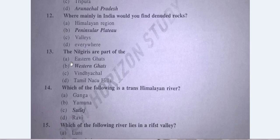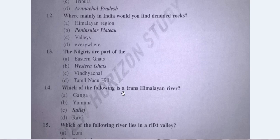Next question: The Nilgiris are part of — A. Eastern Ghats, B. Western Ghats, C. Vindhyachal, D. Tamil Nadu Hills. The answer is B — Western Ghats.